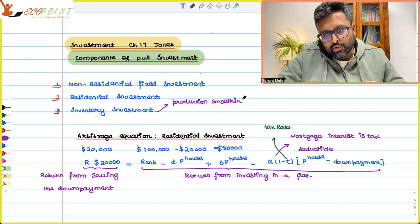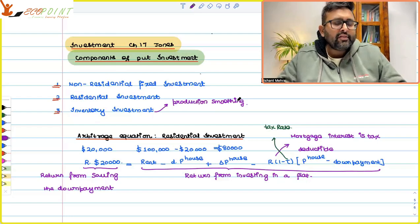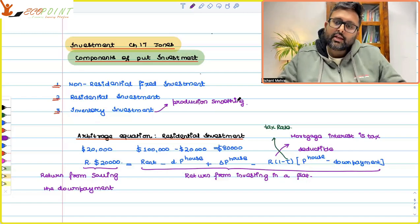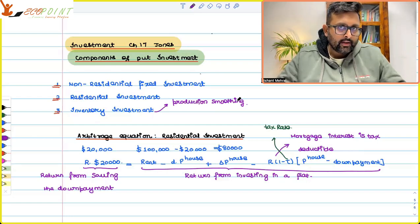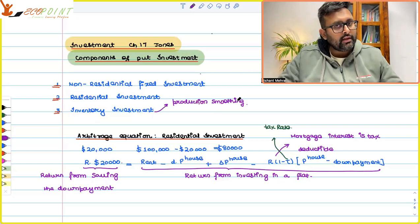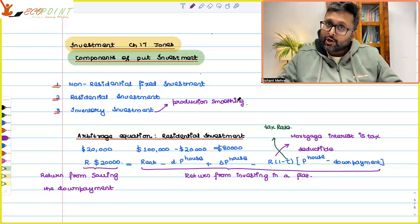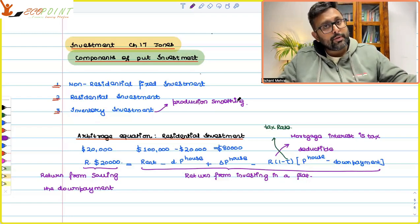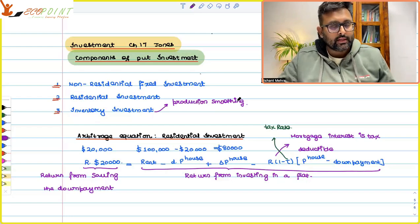One motive is production smoothing. What do you mean by production smoothing? When demand is already high, it is very costly to ramp up production right there and then. So firms generally wish to produce more than what they can sell. During good times they will produce more, knowing demand is also more. But during bad times they would want to produce less than what they can sell — and whatever was produced but not sold during good times can be used now. That is what production smoothing is.